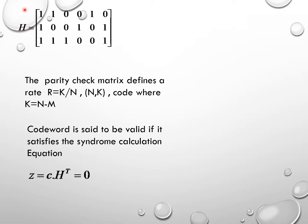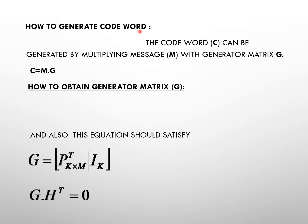The parity check matrix H defines the code rate. The rate R equals k divided by n for an (n, k) code, where k is calculated as n minus m. A codeword is said to be valid if it satisfies the syndrome calculation equation: z = c · H^T = 0. Any codeword is error-free if it satisfies this syndrome calculation equation.